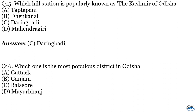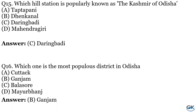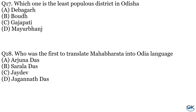Question No. 16: Which one is the most populous district in Odisha? Option A: Cuttack. Option B: Ganjam. Option C: Balasore. Option D: Mohendragiri. The answer is Option B, Ganjam. Question No. 17: Which one is the least populous district in Odisha? Option A: Devgarh. Option B: Boudh. Option C: Gajapati. Option D: Mohendragiri. The answer is Option A, Devgarh.